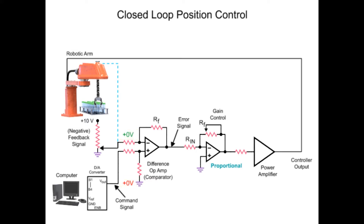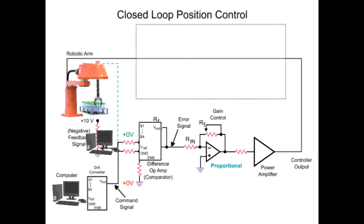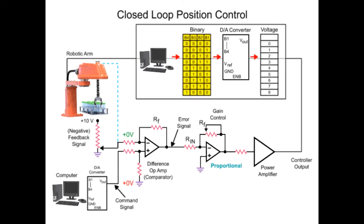To change the arm to another position, a command signal from the computer is required. The command signal consists of binary numbers that increment until a value is reached that represents the desired position. The binary value is then converted to an analog voltage by the digital-to-analog converter, indicating the position that the arm is required to move.